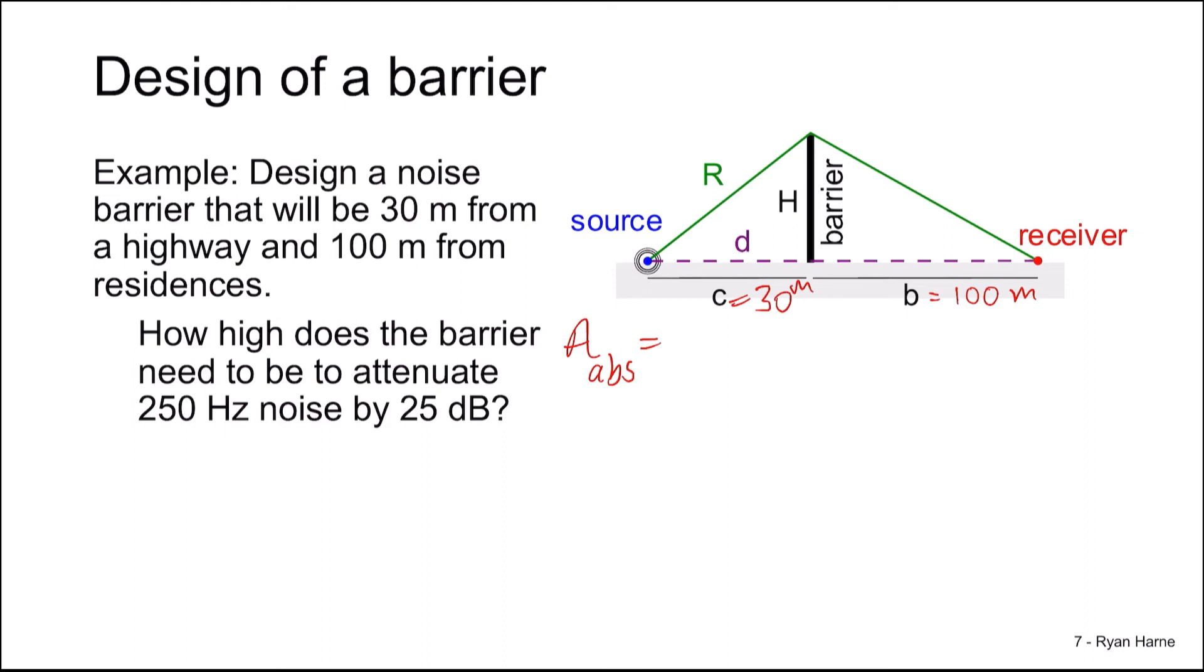So let's work backwards. The absorption we desire from the barrier needs to be 25 decibels. We know our equation A_abs is equal to 10 log 10 of 20 times N. So when A is 25, N needs to be 5, our Fresnel number.